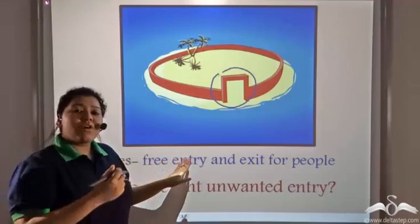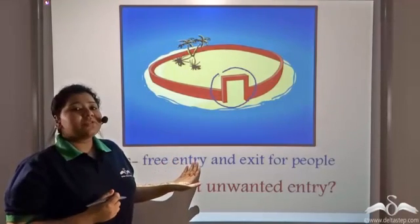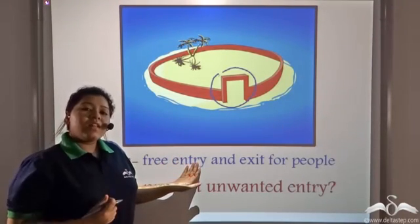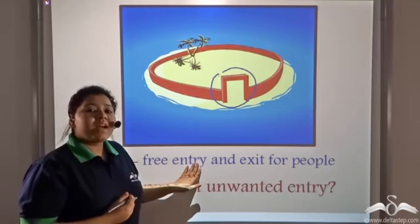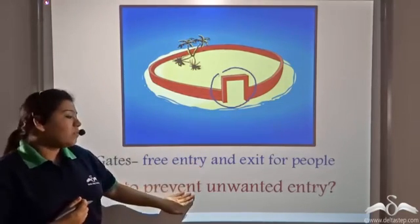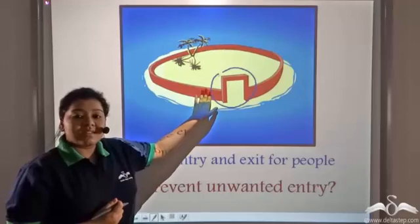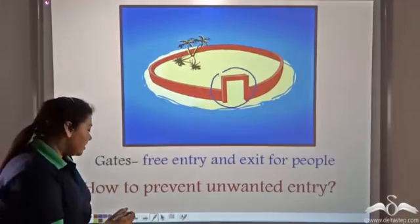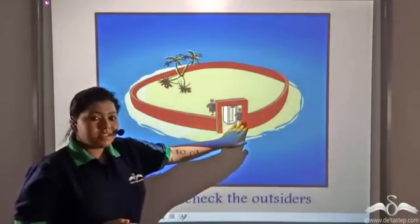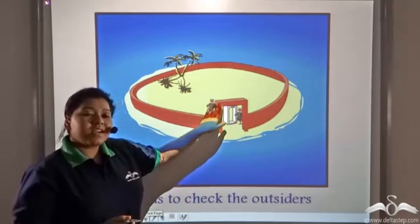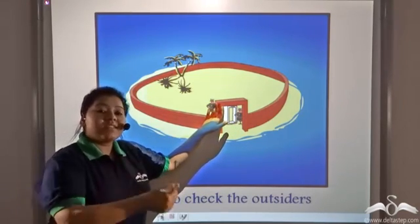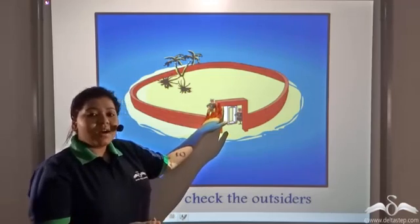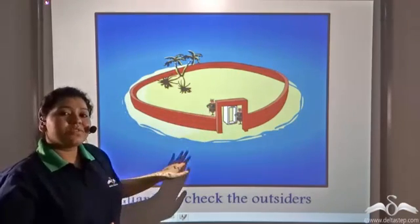So now thieves and robbers were also entering into the city and creating a lot of problems. So how did the old man prevent this unwanted entry into the city? He immediately appointed guards at the gate who were asked to check on every individual trying to leave or enter the city. That is how unauthorized entry was prevented.